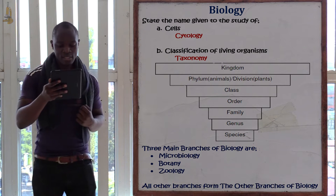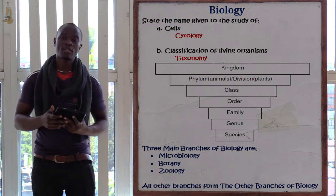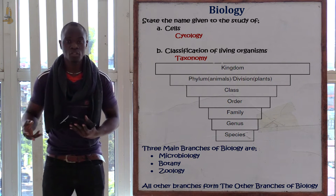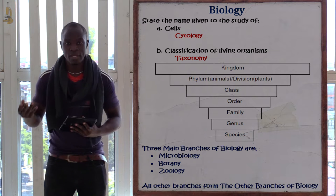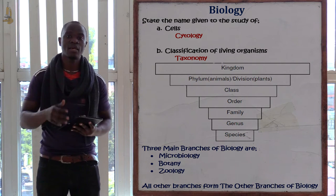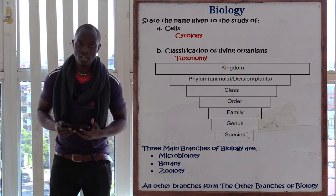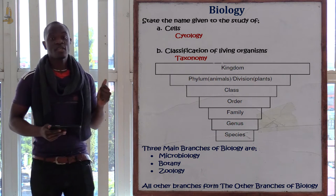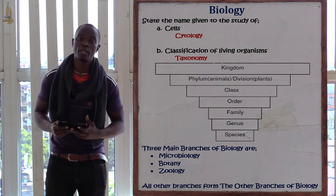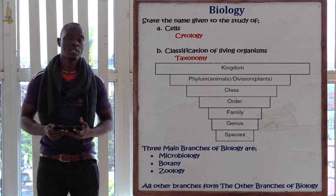For the classification of living organisms, we have taxonomy. Taxonomy is the science of classification — the study of grouping organisms and placing them into correct groups of origin and distinction. We have seven taxonomic units. These are: kingdom, phylum or division, class, order, family, genus, and species.